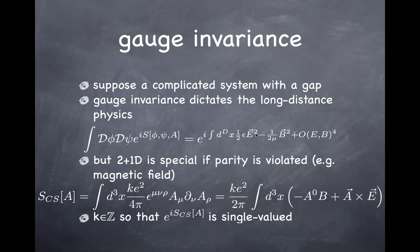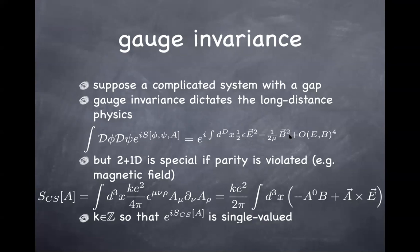As a result, you typically have parameters corresponding to E-squared and B-squared in your effective action — the dielectric constant and magnetic permeability. But it turns out 2+1 dimensions is quite special, especially when you have a magnetic field. You can write yet another term that appears at a lower dimension compared to E-squared and B-squared. The field strength has one derivative already, so E-squared and B-squared have two derivatives. But the Chern-Simons term has only one power of the derivative, making it more important at long distances.